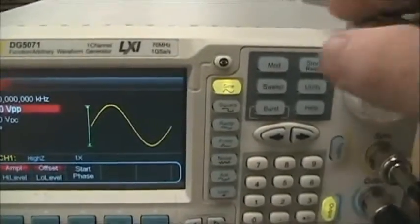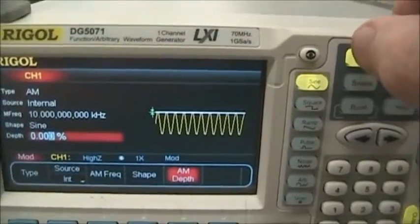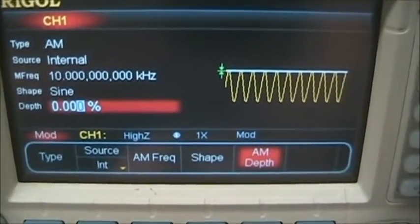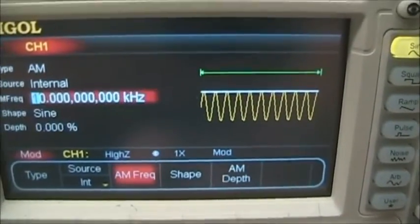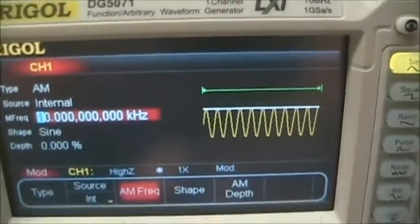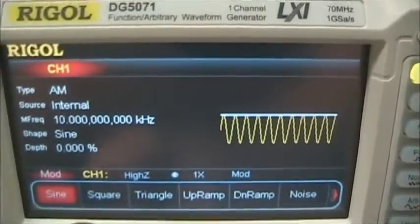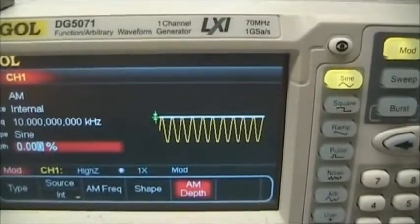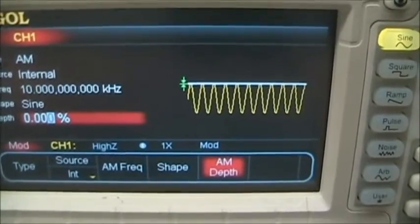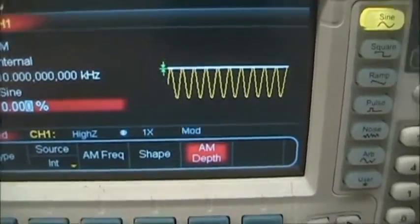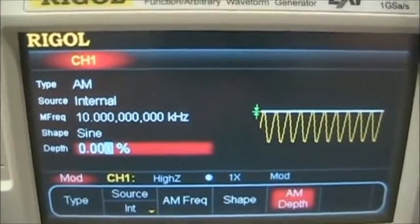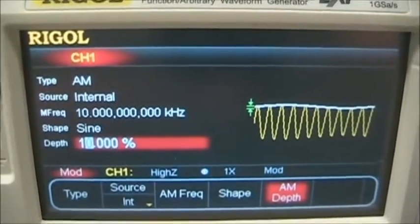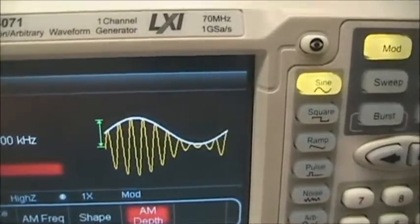Now the modulation is set up with the mod button. So when I press the mod button, you're going to see the type and the source can be internal or external. We're going to use internal. The AM frequency, in this case we have it set to 10 kilohertz. The shape is sinusoidal. You'll later on use square and triangle, and then the AM depth. This is the modulation index, which is the ratio of the modulation voltage EM divided by E sub C. It can range from 0 to 100%. We're going to set this to be 100% so we can look at that signal.